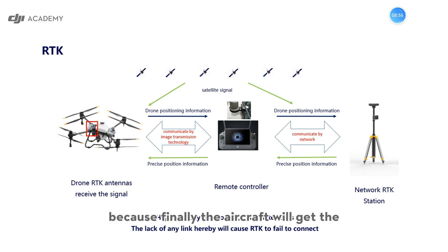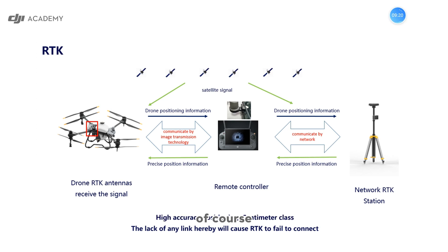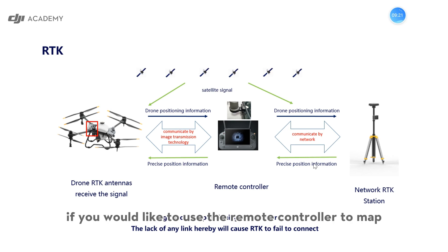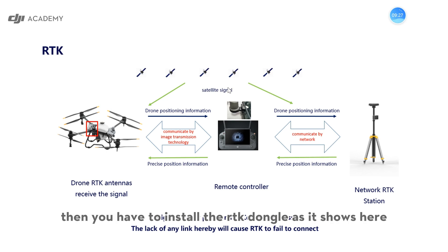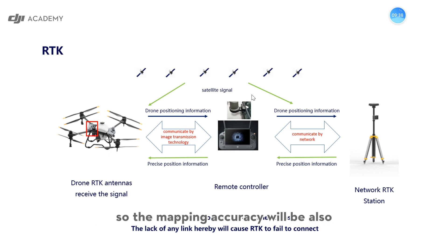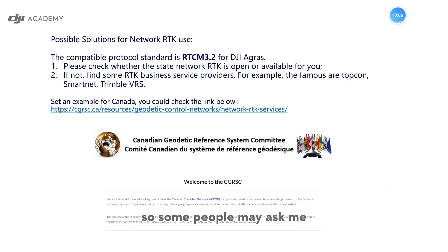The aircraft will still achieve higher accuracy positioning. If you would like to use the remote controller to map a field with RTK signal, you have to install the RTK dongle as shown here. The mapping accuracy will also be centimeter-level.